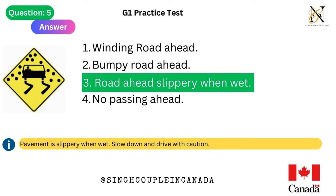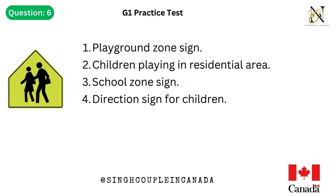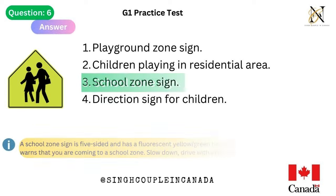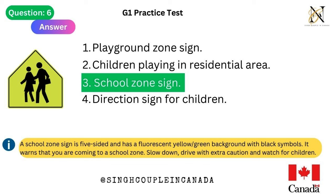Question 6. This traffic sign means: 1. Playground zone sign. 2. Children playing in residential area. 3. School zone sign. 4. Direction sign for children. Answer is 3. School zone sign. A school zone sign is 5-sided and has a fluorescent yellow/green background with black symbols. It warns that you are coming to a school zone — slow down, drive with extra caution and watch for children.